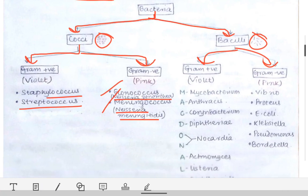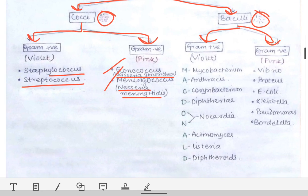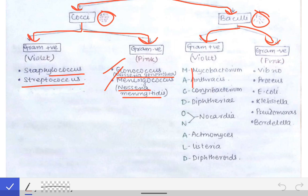To remember the names of the gram positive bacilli, a mnemonic has been made using the word 'McDonald.' You all must have visited McDonald's, and by using that mnemonic you can remember the names of the gram positive bacilli concerned in microbiology. After this lecture, whenever you visit McDonald's, you will remember these names for your lifetime.